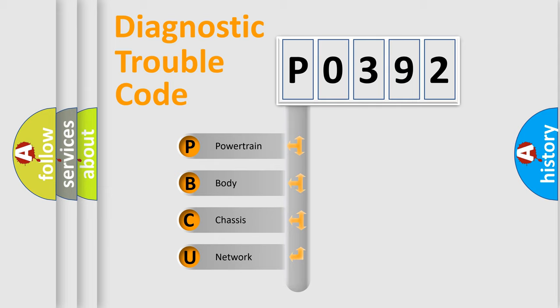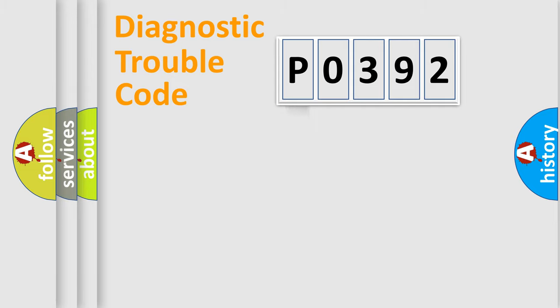We divide the electric system of automobile into four basic units: Powertrain, Body, Chassis, Network.